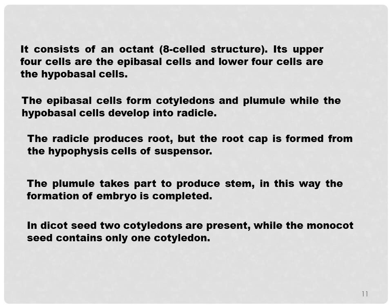The formation of the embryo is completed. In dicot seeds, two cotyledons are present, while monocot seeds contain only one cotyledon. Seeds are divided on the basis of the number of cotyledons — seeds with one cotyledon are monocots, and seeds with two cotyledons are dicots.